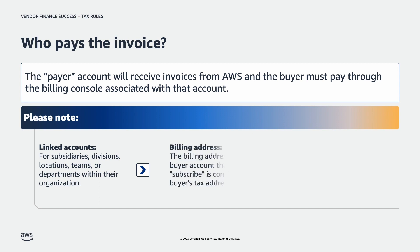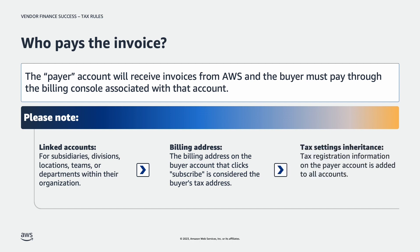The billing address on the buyer account that subscribes to the AWS Marketplace product is considered the buyer's tax address. The address for a linked account is considered the tax address, unless the buyer sets up a tax address on their account. A buyer can use the tax registration number of the payer account for linked accounts by enabling tax settings inheritance. When tax settings inheritance is enabled, the tax registration information on the payer account is added to all accounts on your AWS organizations.